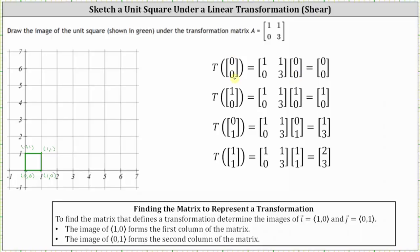The transformation of (0, 0) is still (0, 0), which means under the transformation the point at the origin does not change. The transformation of (1, 0) is still (1, 0), which means the point (1, 0) does not change under the transformation.